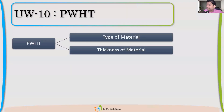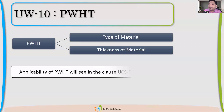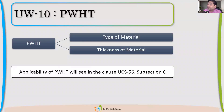Now, where will I find whether PWHT is required or not? PWHT depends upon the type of material — we will get the details in UCS-56. It also depends upon the type of material and the thickness of material. Both are very important. When it is required, when it is not required, for which thickness it becomes mandatory — all that we'll see in UCS-56.